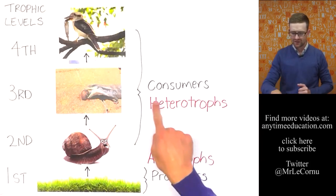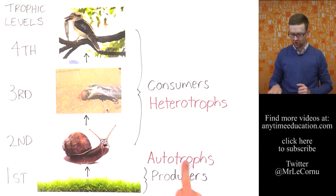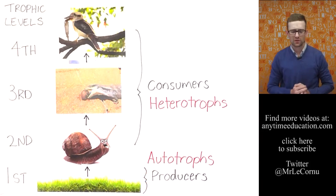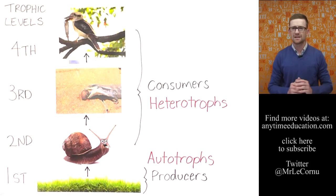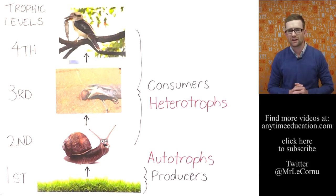Now just bear in mind today we've talked about consumers or heterotrophs and producers or autotrophs and there is actually a third group that is a very important part of a food chain. We haven't talked about them today but they're called decomposers. If you'd like to find out more about decomposers you can do that by watching a separate video. So that's been our lesson on food chains looking at autotrophs and heterotrophs. I hope that you found it helpful and thanks very much for watching and we'll see you next time.